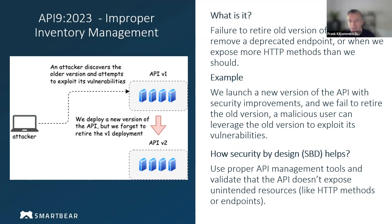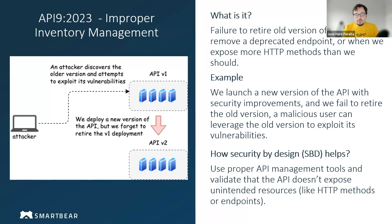We don't want these APIs to fall into a zombie state. So there should be tests as part of your CI/CD flow to fully validate that deprecated endpoints are no longer accessible in production. A lot of API gateway products allow you to manage versioning and releases. When deprecating an endpoint, make sure the new version of the API certainly doesn't have that endpoint.